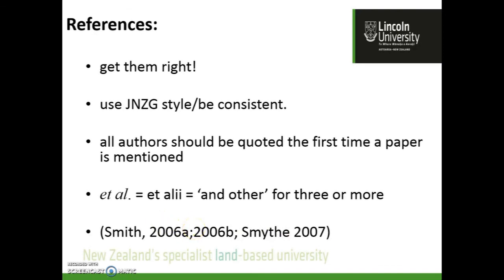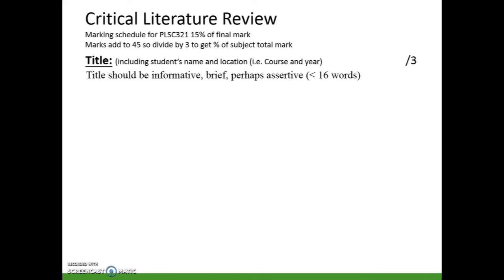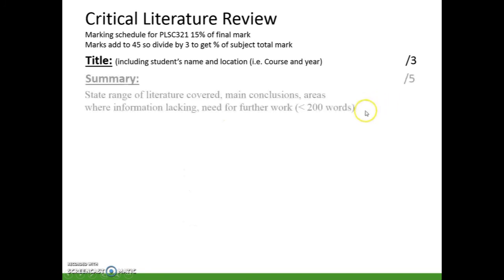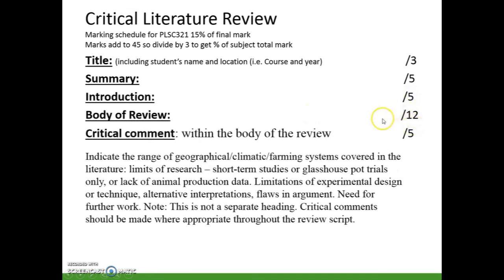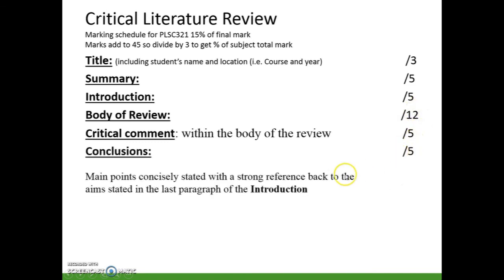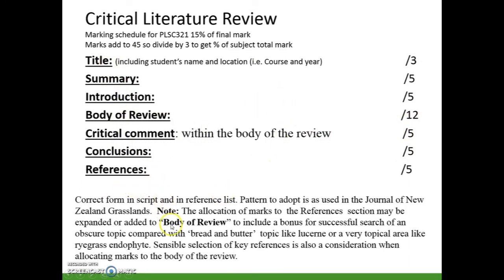A literature review must be logical and come to a logical conclusion. Make sure you go back and look at the marking schedule — it differs for each topic. In this example for Plant Science 321, students get marks for the title, for a summary of less than 200 words, an introduction, the body of the review — which carries the most marks — critical comment, and some conclusions. References are important, both in the body and how you write them. These are easy marks to get, so make sure you get them.